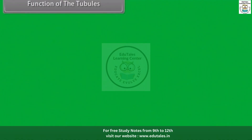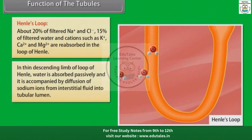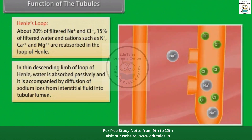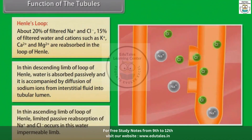Function of the tubules — Henle's Loop. About 20% of the filtered Na+ and Cl−, 15% of filtered water, and cations such as K+, Ca2+ and Mg2+ are reabsorbed in the loop of Henle. In the thin descending limb of the loop of Henle, water is absorbed passively, accompanied by diffusion of sodium ions from the interstitial fluid into the tubular lumen. In the thin ascending limb of the loop of Henle, limited passive reabsorption of Na+ and Cl− occurs in this water-impermeable limb. Because of impermeability to water, the fluid leaving this limb is hypotonic relative to plasma.